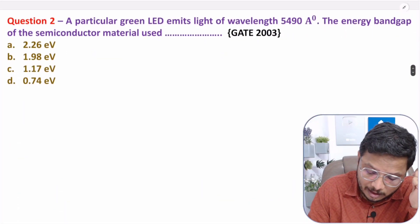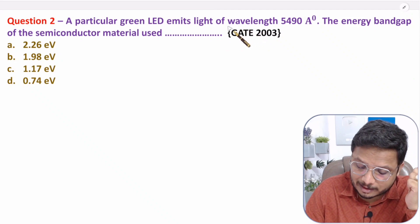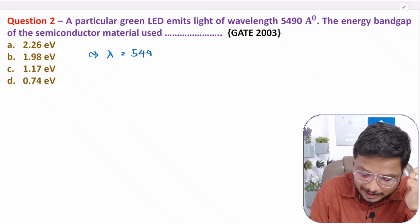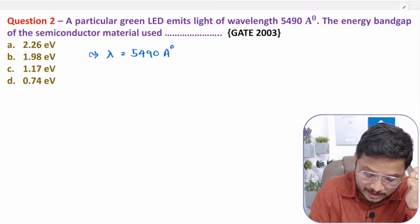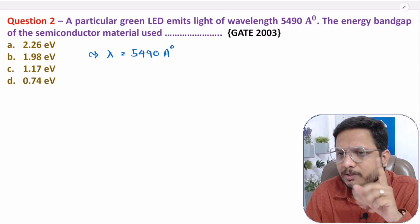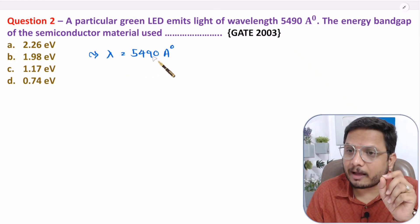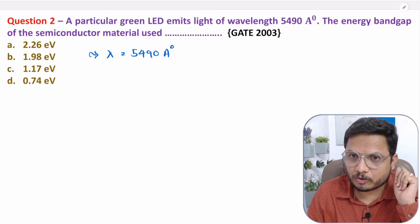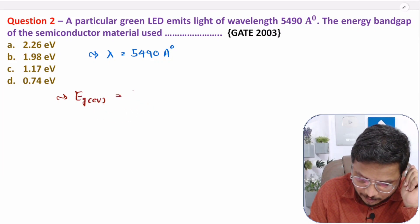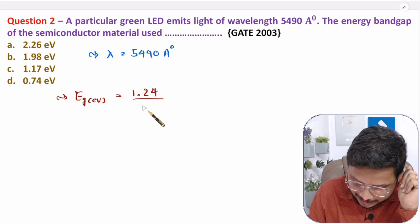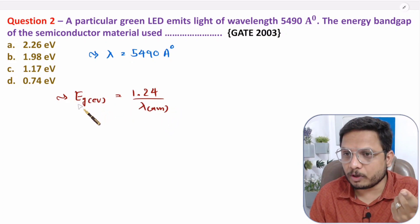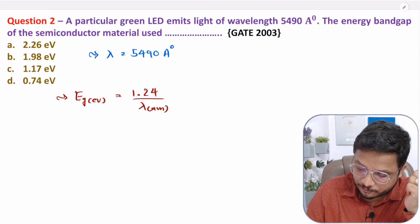A particular green LED emits light of wavelength 5490 angstrom. The energy band gap of the semiconductor material used is how much? There are two ways to solve this. The first method is by converting the wavelength into micrometers. If you want energy band gap in electron volts, the formula is: Eg = 1.24 / λ (in micrometers).